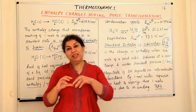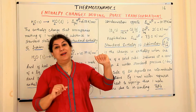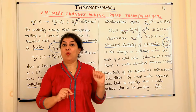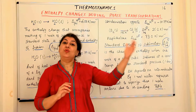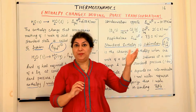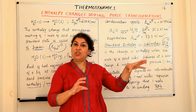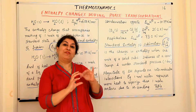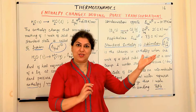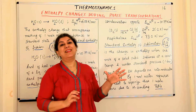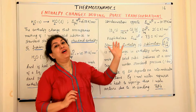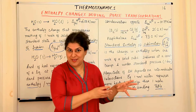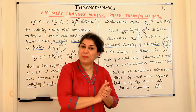If you have liquid water and it turns into gas at its boiling point, water turns into water vapor or gaseous water. This is a phase change, and the enthalpy involved in converting one mole of liquid water to gaseous water is known as the enthalpy of vaporization, because the process taking place is vaporization.